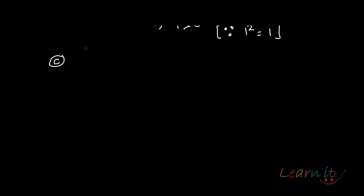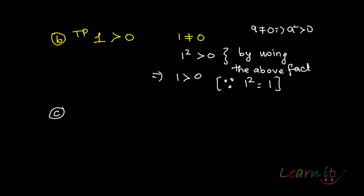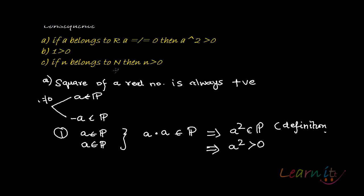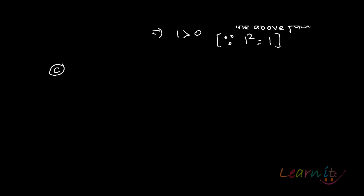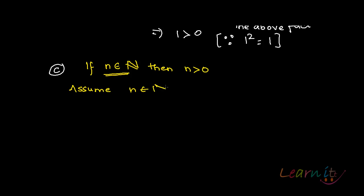Now part C: what we are saying is that any natural number is greater than 0. So if n belongs to the set of natural numbers, then n is greater than 0. We assume n belongs to the natural numbers and proceed by induction.